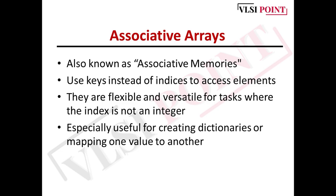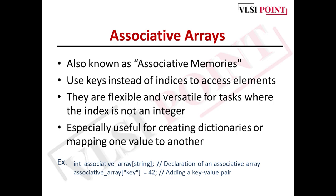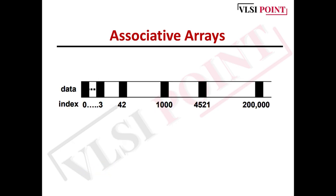Let's see some examples. int associative_array[string]. Here we have used this key string. Next one is associative_array["key"] = 42. Here we are adding a key value pair. You can see in this figure how the memory is allocated non-contiguously. It is not in contiguous manner, randomly the memory has allocated.